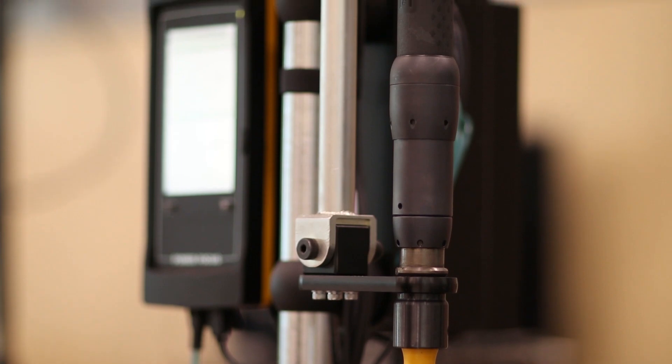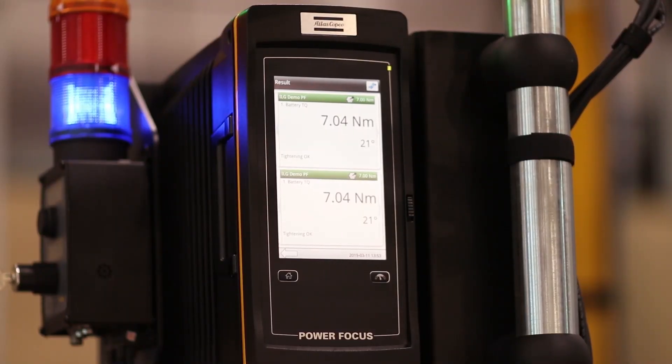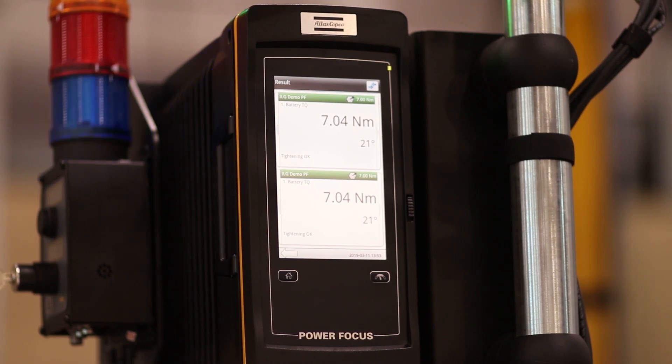ILG integrates seamlessly with Atlas Copco's line of advanced tightening platforms, including the Power Focus 6000 and can be easily added to existing tool systems.